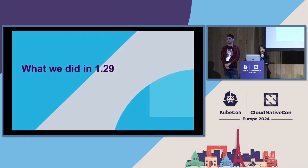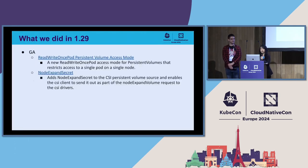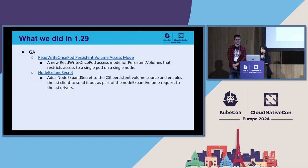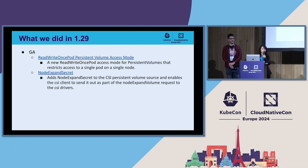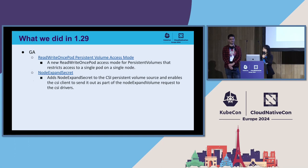In the 1.29 release, we moved the feature ReadWriteOncePod persistent volume access mode to GA. Without this feature, we have a ReadWriteOnce PV access mode, but it's not clear whether it means just one pod or multiple pods on that node that can access the volume. So we added this new volume access mode so that it is clear that only one pod on that node can access the volume, which is very important for some stateful workloads that require single writer access to storage. We also added corresponding changes in the CSI spec.